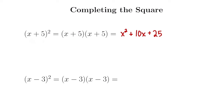We can do the same thing with x minus 3 squared. If we multiply it out, we get x squared minus 6x plus 9. And again, this is a perfect square trinomial.